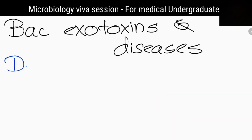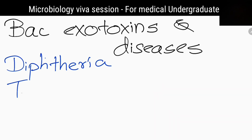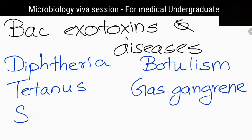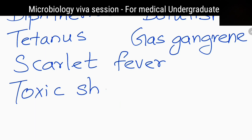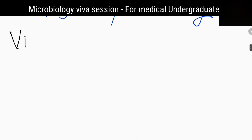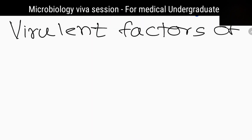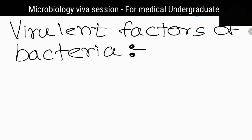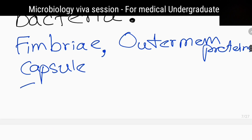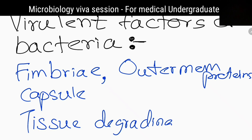What are the diseases caused by exotoxins produced by bacteria? Diphtheria, tetanus, botulism, gas gangrene, scarlet fever, toxic shock syndrome, cholera, and staphylococcal food poisoning. Tell me other virulence factors of microorganisms. Outer cell membrane proteins, capsules, tissue-degrading enzymes like collagenase, hyaluronidase, coagulase, streptokinase, and hemolysins.